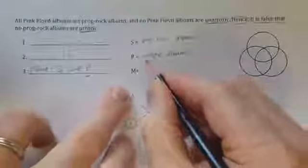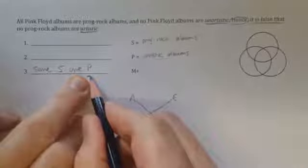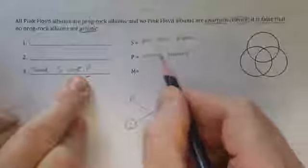Because artistic is not itself a noun phrase or noun, we have to convert it into a noun phrase. And given the context of the argument, artistic albums is sufficient. So, now we look to see which premise contains the term artistic albums.